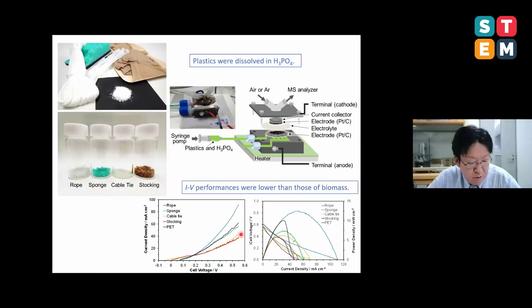Finally, in addition to biomass materials, we also examined plastics such as vinyl, nylon, and polyurethane as hydrogen sources. Same as the case of biomass, these plastics were dissolved in phosphoric acid. Electrolysis and fuel cell performances are shown in these figures. The IV performance were lower than those of biomass, but hydrogen production and power generation from plastics was realized using these electrochemical cells.